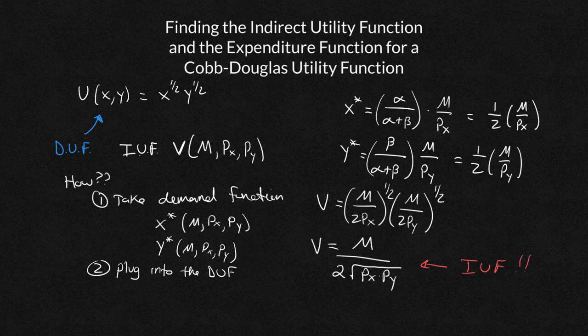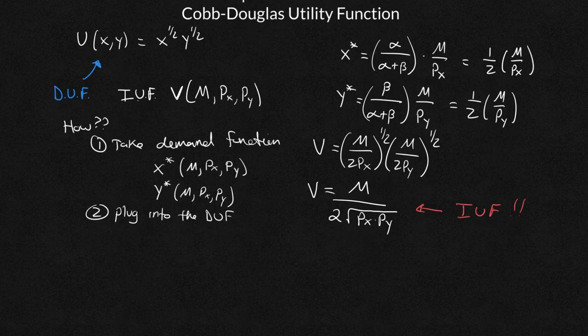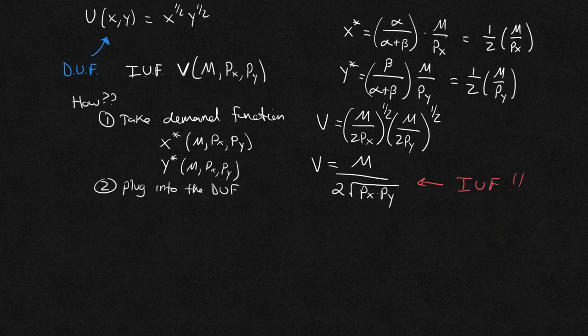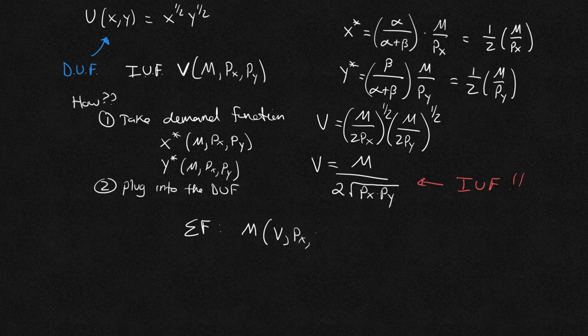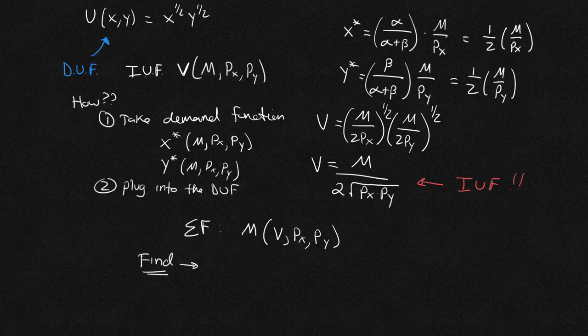The last part of this video, the student asked about doing the expenditure function. The expenditure function is actually quite easy once you get to the indirect utility function. I'm going to scroll up just so we have a little more room. The expenditure function, so EF for expenditure function, is going to be M as a function of your utility, P of x and P of y. So all you're doing to find the expenditure function once you have your indirect utility function is you solve indirect utility function for M.